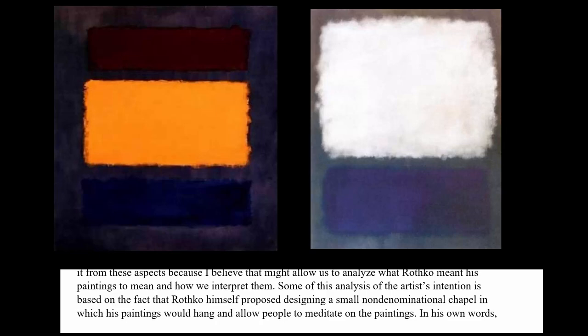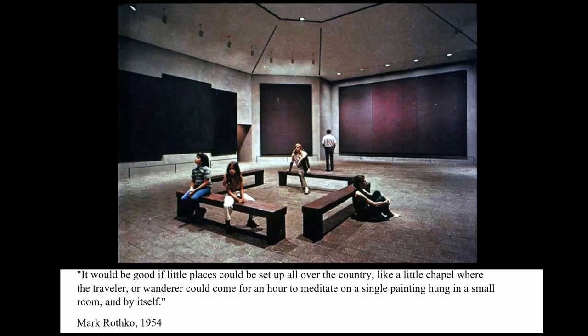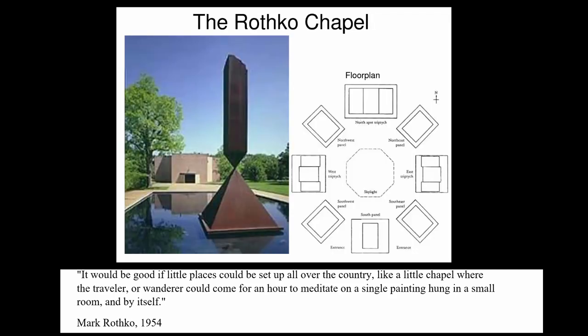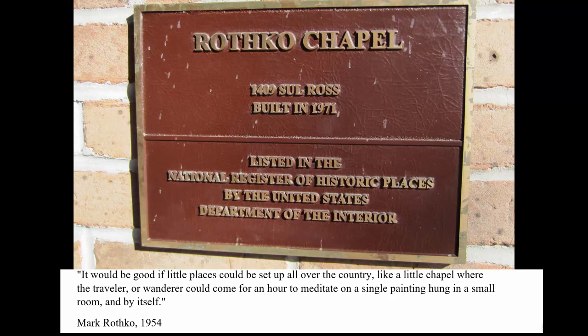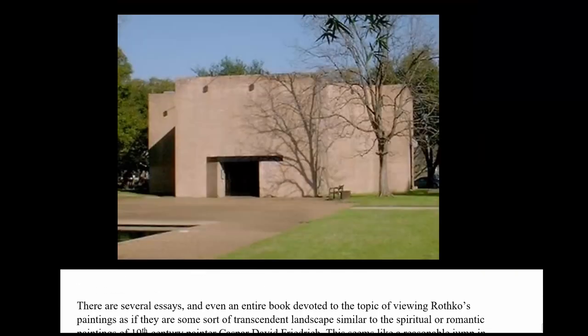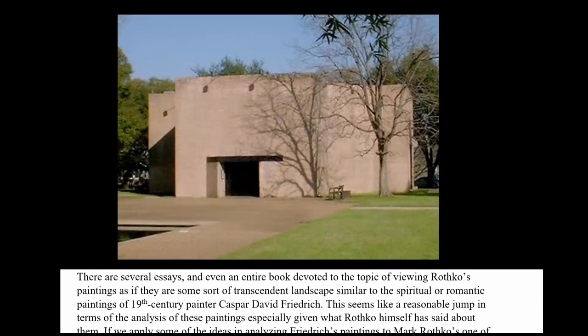Rothko himself basically said that he was trying to get to some spiritual essence. He said: 'It would be good if little places could be set up all over the country, like a little chapel where a traveler or wanderer could come for an hour to meditate on a single painting hung in a small room and by itself.' That vision was later turned into the Rothko Chapel in 1965. It's interesting because he died in 1970.